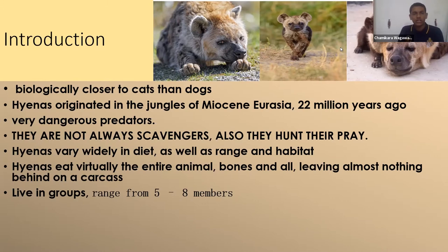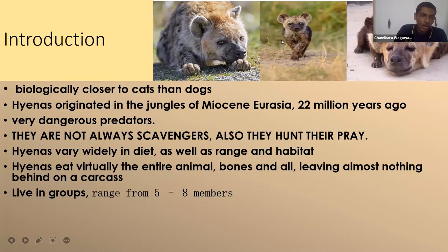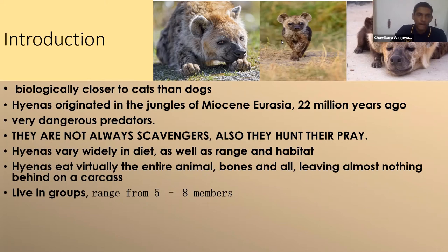Hyenas originated in the jungles of Miyas in Eurasia approximately 22 million years ago. They are very dangerous predators, as you may have seen in videos. In many places hyenas are considered scavengers — animals that eat dead bodies — but they are not always scavengers; they also hunt their own prey.